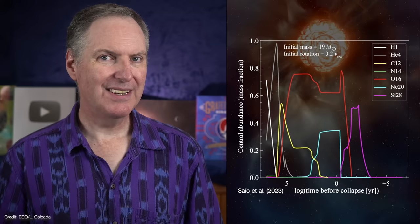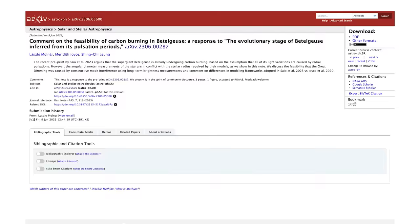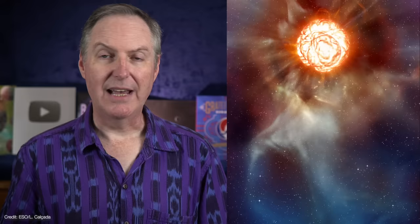So there you go. Betelgeuse is fusing carbon and getting ready to check out in style, right? Well, no, not according to the rebuttal published by Monar, Joyce, and Lund. Their main objection is that Sayo's model makes Betelgeuse too giant.